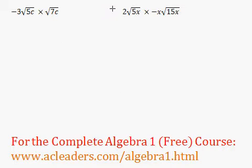So now let's start throwing some variables into the mix when we're multiplying radicals. And here we have negative 3 root 5c times root 7c.